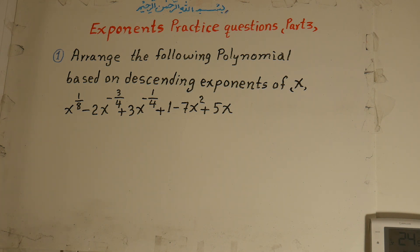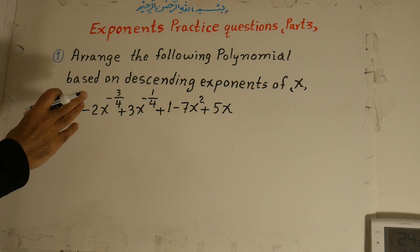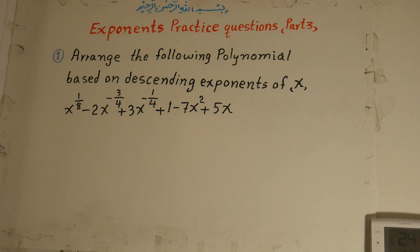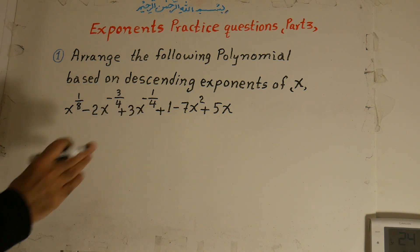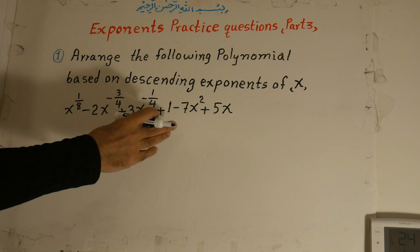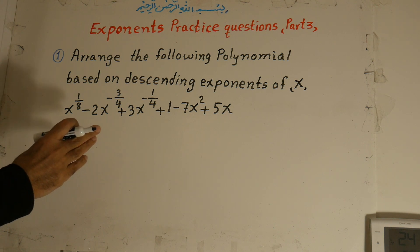Question number 1. Arrange the following polynomial based on descending exponents of x. In the previous lesson, we talked about the Ascending Exponent. Now this is Descending. Descending means starting from the greatest power or exponents and continuing toward the smallest.